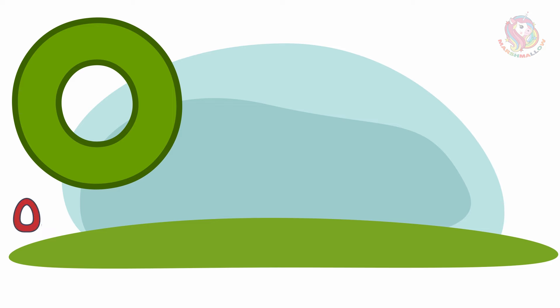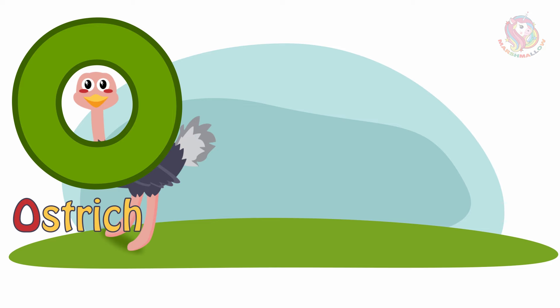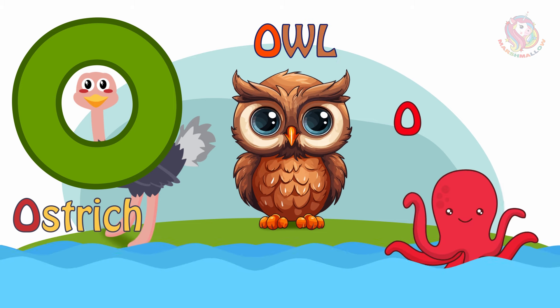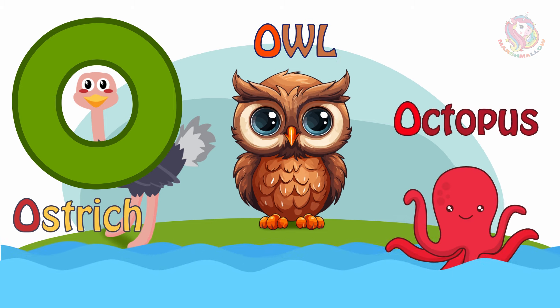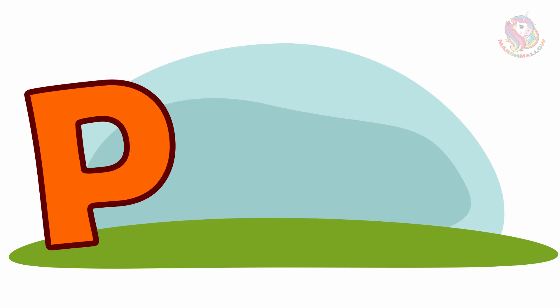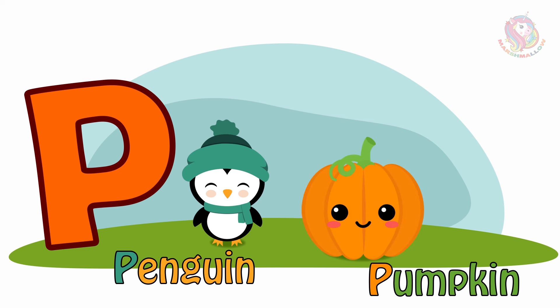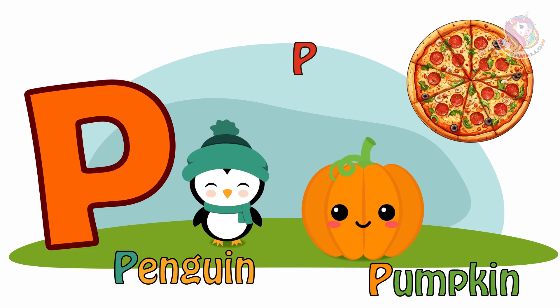O - O is for Ostrich. O is for Owl. O is for Octopus. P - P is for Penguin. P is for Pumpkin. P is for Pizza.